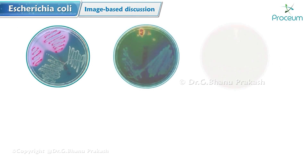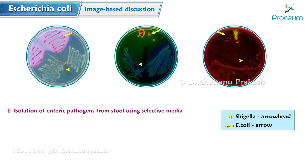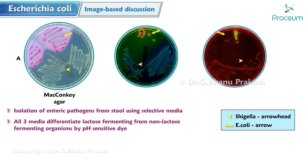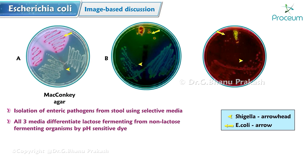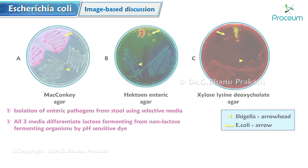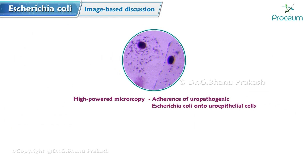In image-based discussion: this is an image of the isolation of enteric pathogens from stool using selective media. On each plate, Shigella is indicated by an arrowhead and E. coli by an arrow. All three media differentiate lactose-fermenting from non-lactose-fermenting organisms by pH-sensitive dyes. Panel A shows MacConkey agar, Panel B shows Hektoen Enteric agar, Panel C shows Xylose Lysine Deoxycholate (XLD) agar. Another image demonstrates high-powered microscopy showing adherence of uropathogenic E. coli onto uroepithelial cells.